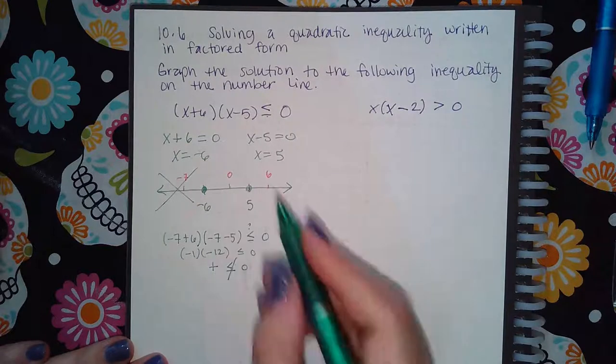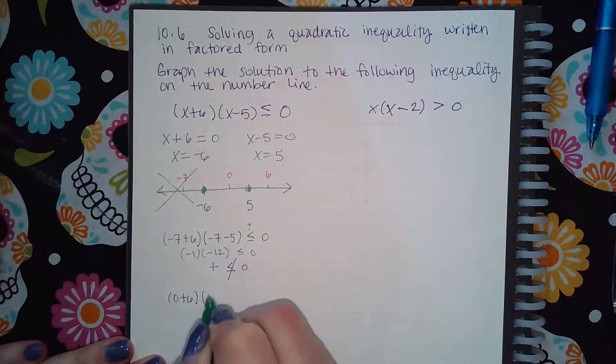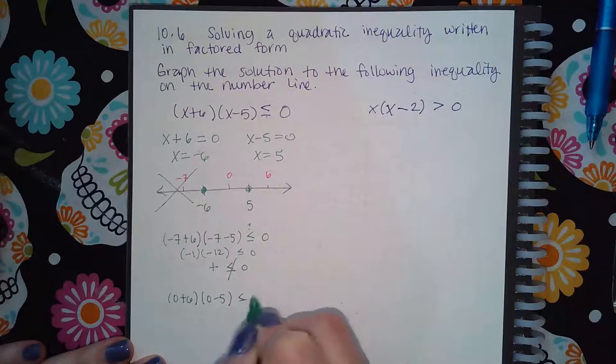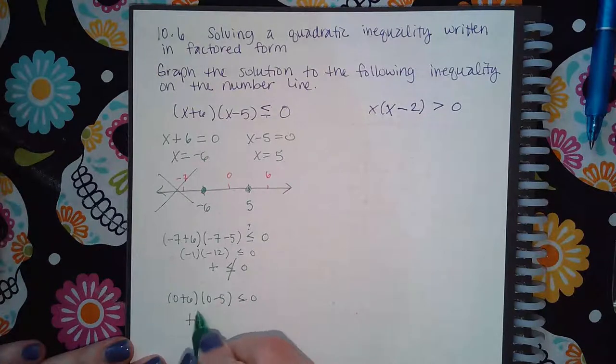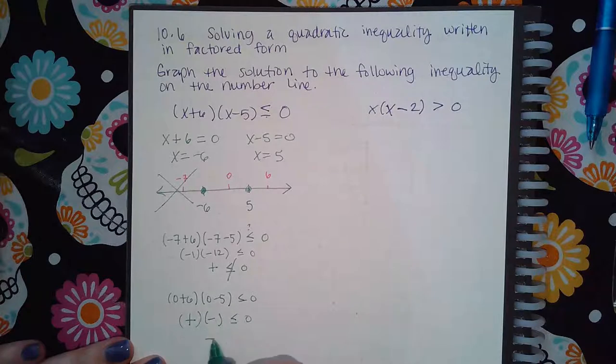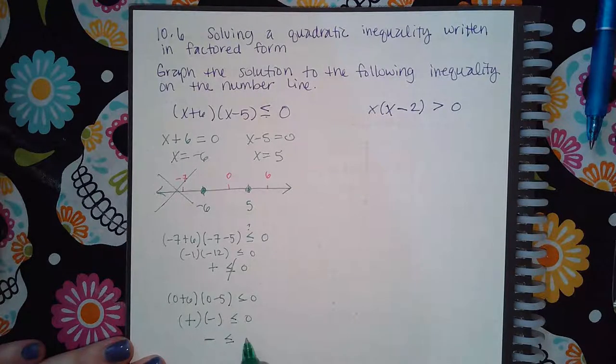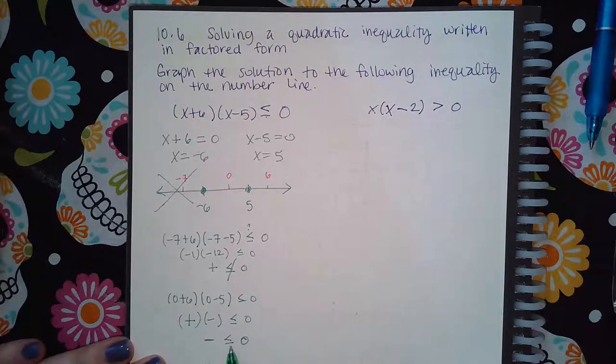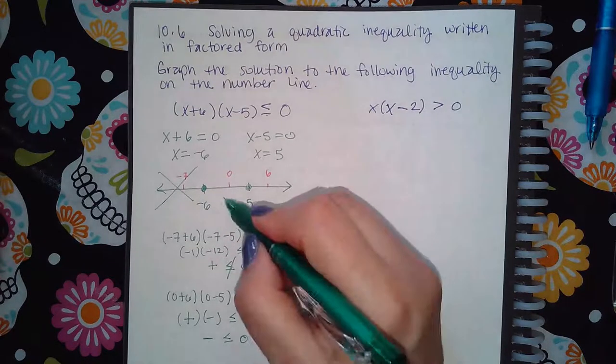Then I would try to plug in zero. Zero plus six, zero minus five. That's going to give me a positive six. This is going to give me a negative five. And a positive times a negative will give me a negative. And negative numbers are less than zero. So this section does work.